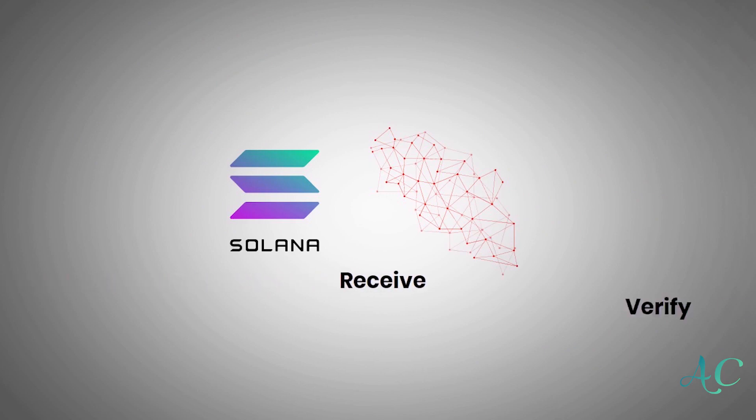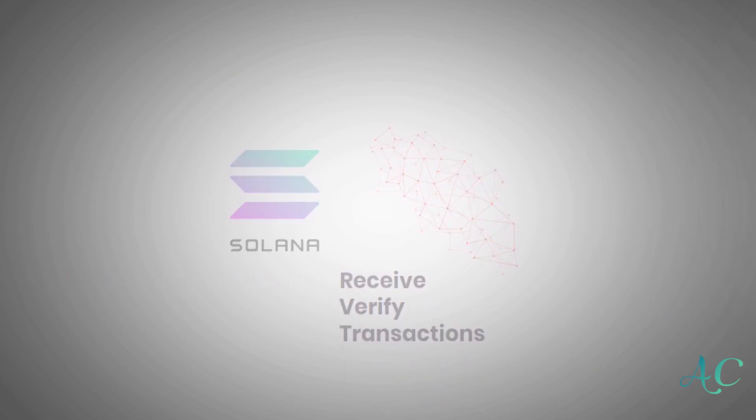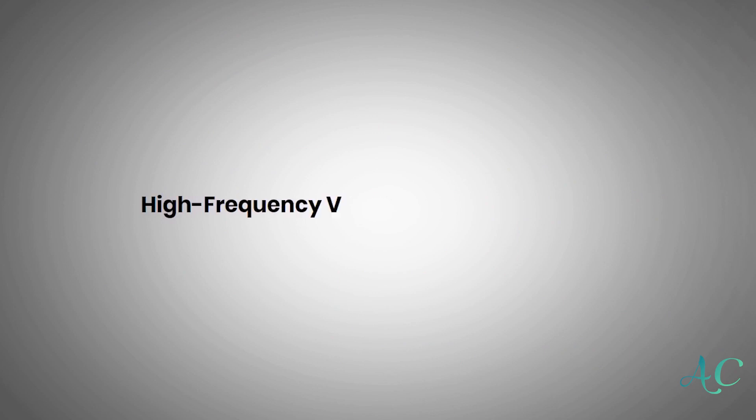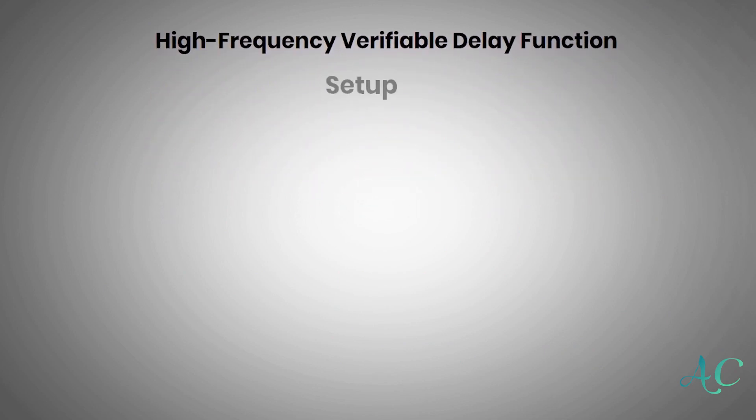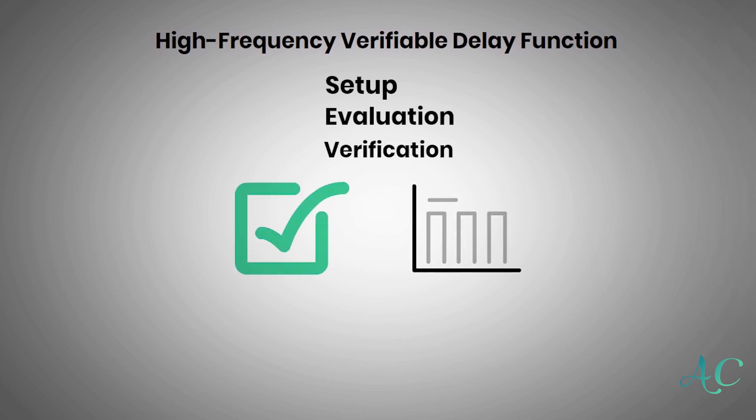Solana's network really contains 200 physically different nodes that receive, verify, and send transactions. Its algorithm, known as a high frequency verifiable delay function or VDF for short, is a triple function like setup, evaluation, and verification to produce unique and trustworthy outputs. VDF also guarantees network stability by proving block producers have waited a sufficient amount of time so the network can move forward.